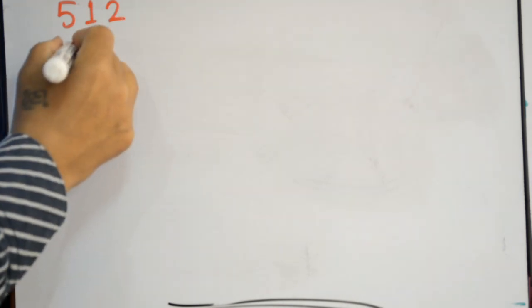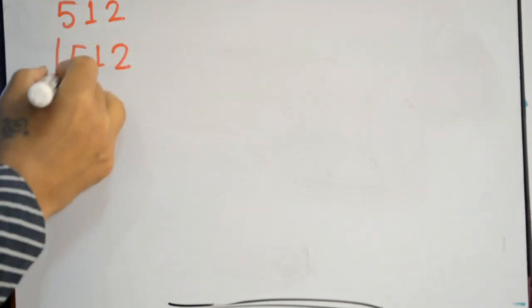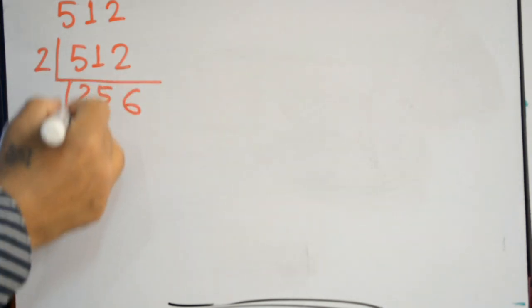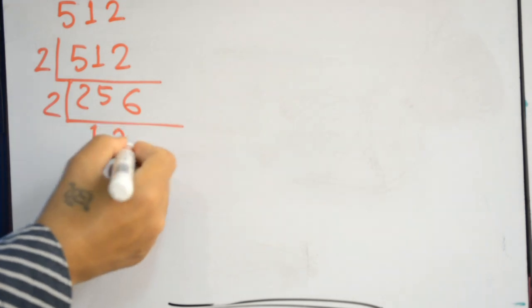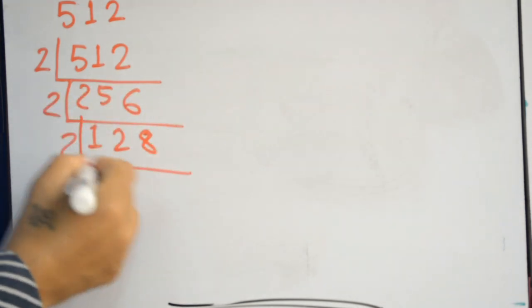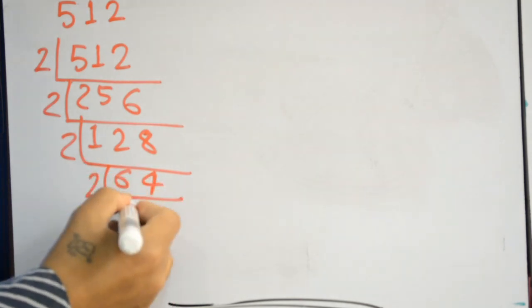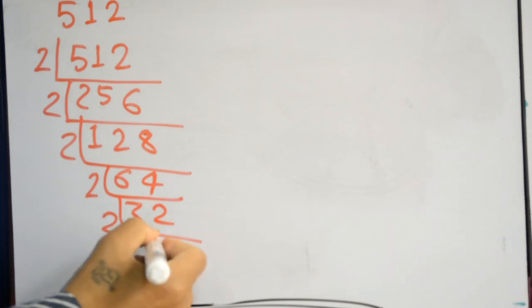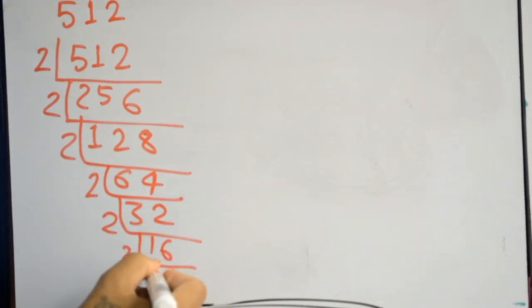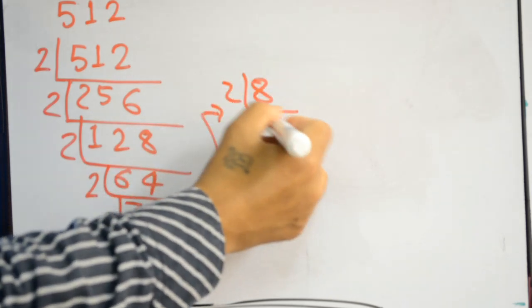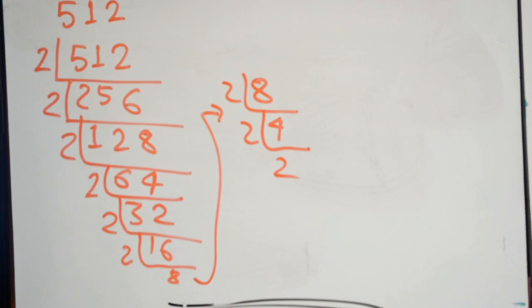Let's take one more example: 512. We start prime factorization by dividing by 2 repeatedly since 512 is even. Dividing step by step: 512, 256, 128, 64, 32, 16, 8, 4, 2, 1. We get nine 2s as the prime factors of 512.